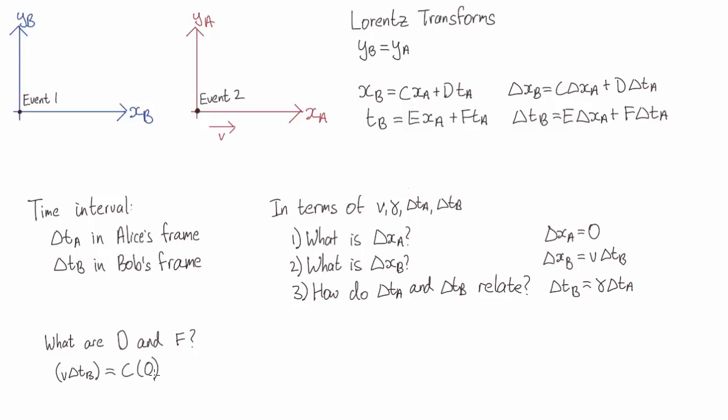Sticking these values into our Lorentz transforms, we have, and so you'll find D is equal to gamma V, and F is equal to gamma. And there we are. We are half done.